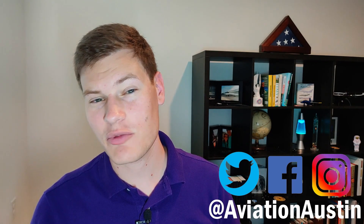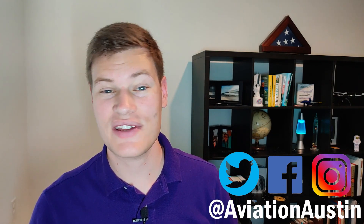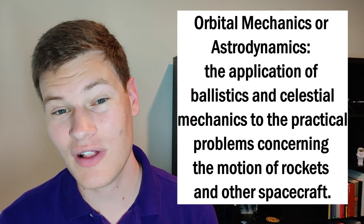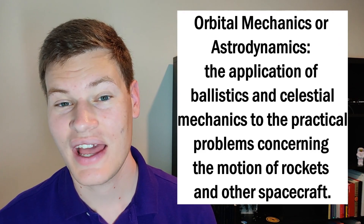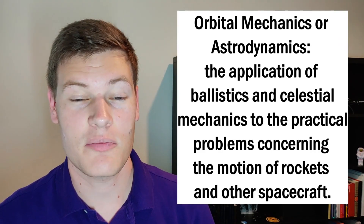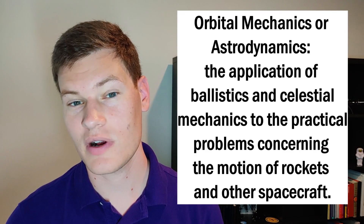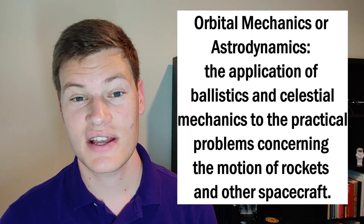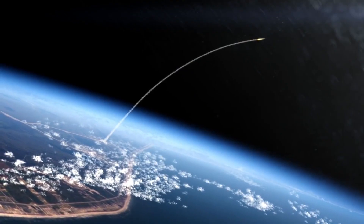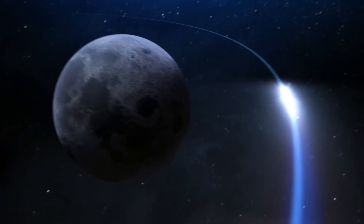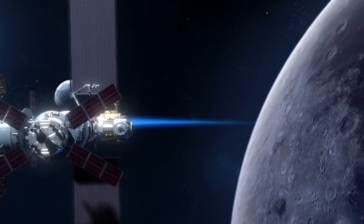In my last video, I explained what an orbit is and how it works. But in this video, we're going to dive a little bit deeper into how we define orbits and how we differentiate them from each other. In fact, this is an entire discipline of aerospace engineering known as orbital mechanics, or astrodynamics. Orbital mechanics is the practical application of ballistics and celestial mechanics in the motion of rockets and spacecraft — in other words, this is how engineers use physics to calculate how to get places in space, using different orbits to our advantage.